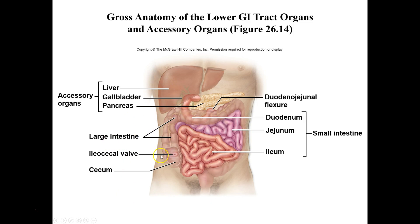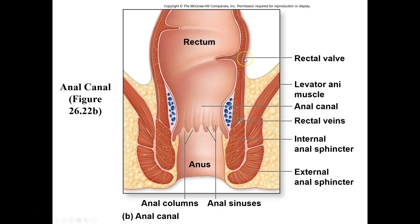From the cecum we move into the colon. This entire structure that forms a frame around the small intestines is known as the large intestines or colon. We have an ascending colon, a transverse colon, a descending colon, and a sigmoid colon that leads to the rectum and then the anus. Within the anus we have an external anal sphincter and an internal anal sphincter. The internal anal sphincter is composed of smooth muscle, whereas the external anal sphincter is skeletal muscle.